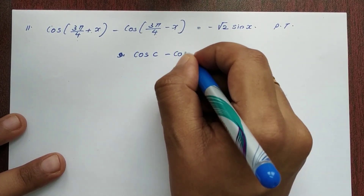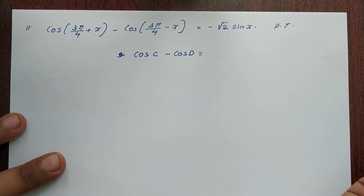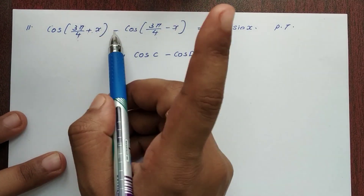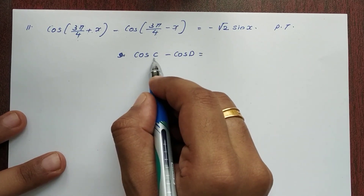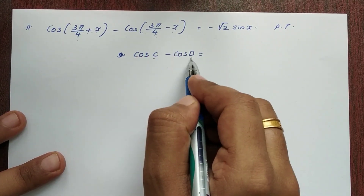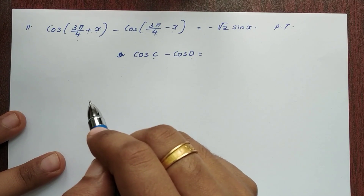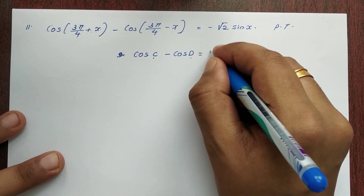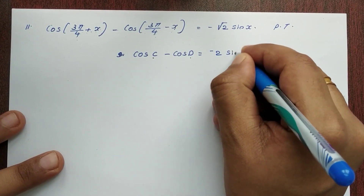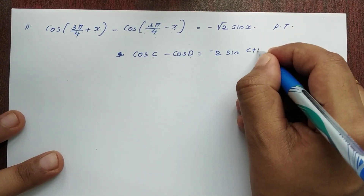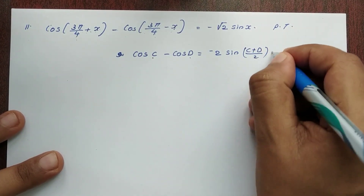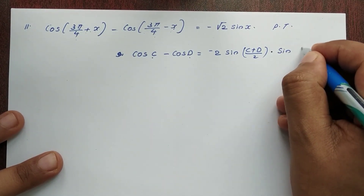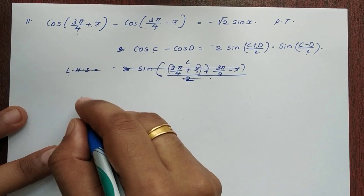Like this: cos c minus cos d. The result is: cos c minus cos d equals minus 2 · sin((c+d)/2) · sin((c-d)/2).